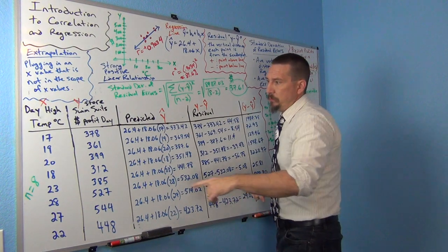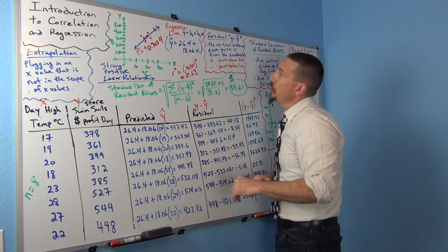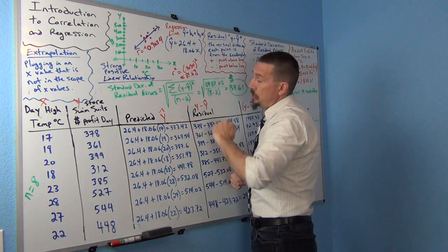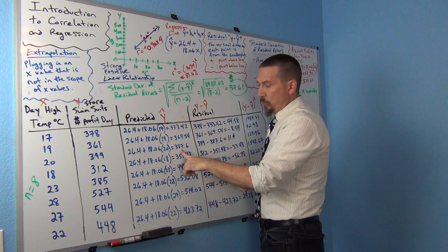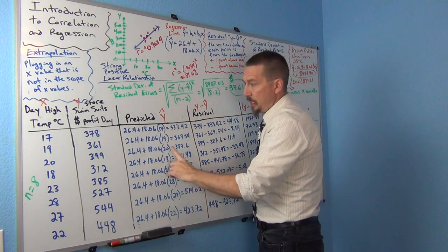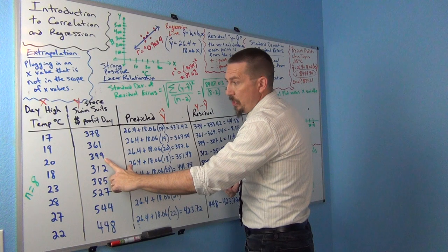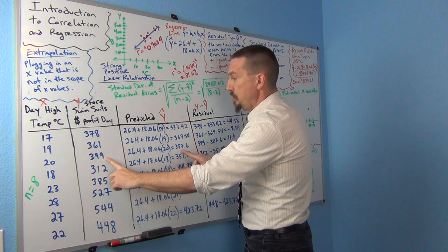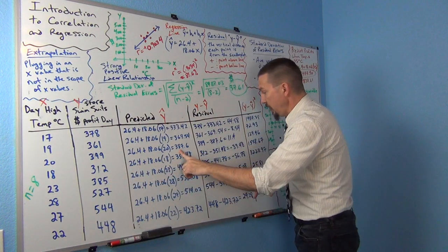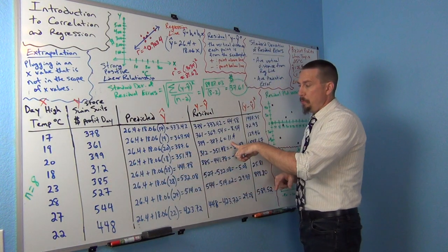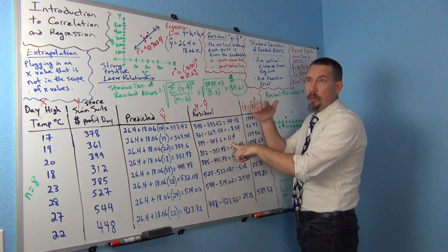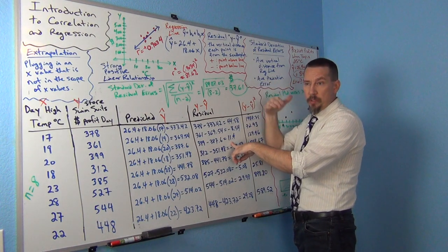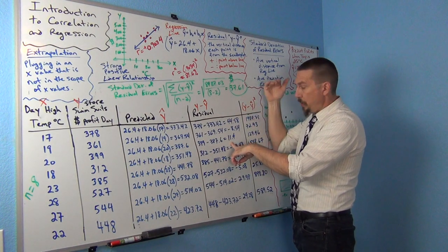Now if we go to the next one, 20. 20 was our X value. We're going to plug that in for X into the formula. And that gives us a predicted Y value of 387.6. Again, my actual Y value is 399. So if I subtract those Y values, I'll get the vertical distance. So 399 minus 387.6 gives us a positive 11.4. So that point was 11.4 above the line. Negative residuals mean the point was below the line. Positive residuals mean it was above the line.